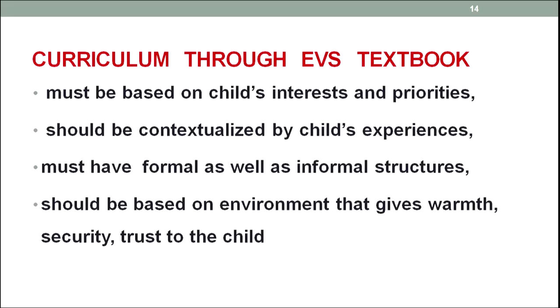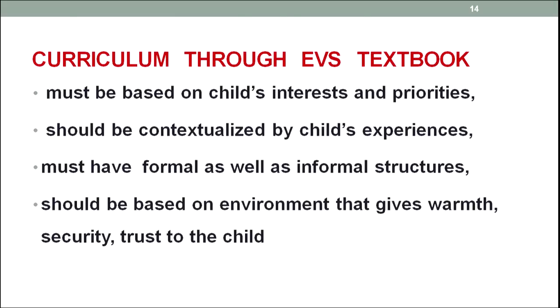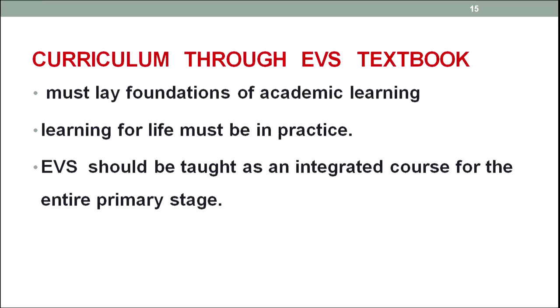Curriculum must be based on child interest and priorities — it should not be merely textual, but should have a definite context, contextualized by child experiences, and must have formal as well as informal structures. Formal means having a definite course content, while informal structure means having space for children's experiences. It should be based on an environment that gives warmth, security, and trust to them. EVS curriculum must lay foundations of academic learning, but must also lead to learning for life, developing a spirit of learning over a period of time. EVS should be taught as an integrated course for the entire primary stage, not restricted to particular classes.